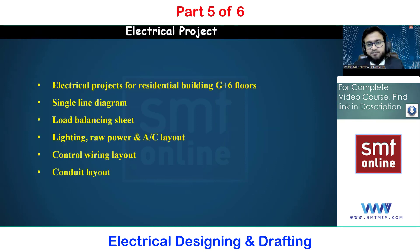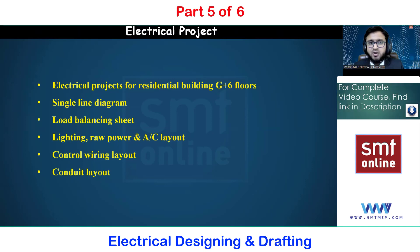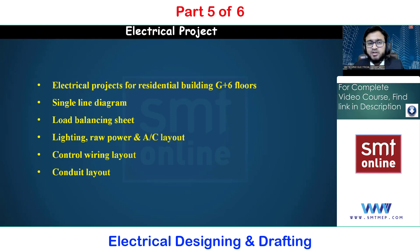Next, regarding the electrical project — after completing the course content, we will work through a project for a residential building of G+6 floors, that is ground floor plus six stories. This project includes a single line diagram showing how supply is distributed from the main distribution board, through sub-main distribution boards and distribution boards, down to the lighting switch boards. The single line diagram gives the complete outline of the project, followed by load balancing sheets.